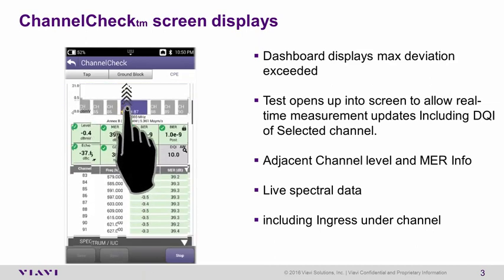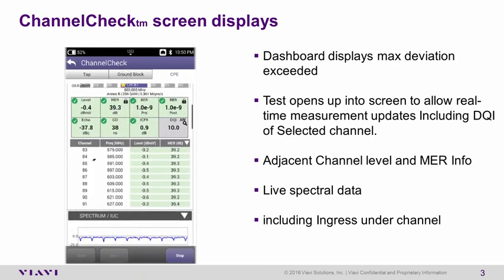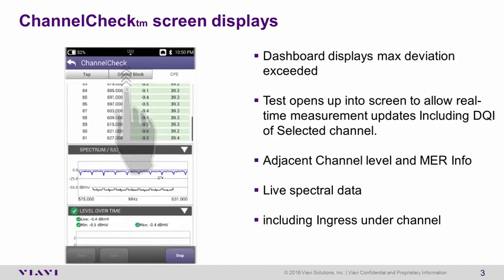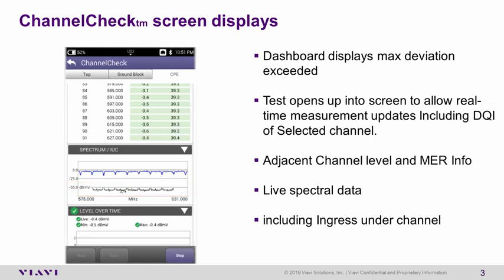As we page up we will see some of the adjacent channels. Since I'm on channel 87, we see the lower adjacent channels and the upper adjacent channels, showing the relative level as well as their MER or noise floor. One thing interesting about the ONX meter is that we also display ingress underneath the actual channel itself — not just channel 87 in the center, but also the lower and upper adjacent channels.